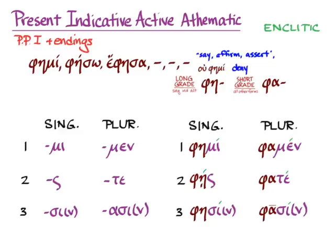So we have ἐφημί, I say; φῄς, you say; φησί or φασί, she says; φαμέν, we say; φατέ, y'all say; and φασί or φασίν, they say.